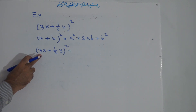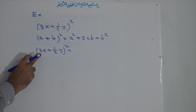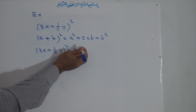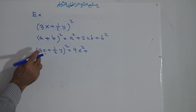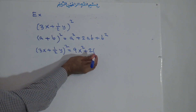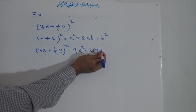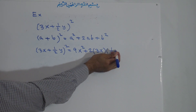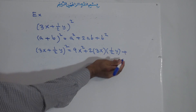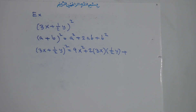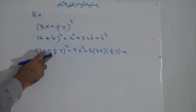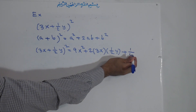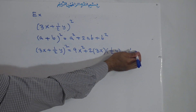The square of 3 is 9, so 3 times 3 is 9, and the square of x is x to the power of 2, giving us 9x squared. Then plus 2 times a times b: a is 3x and b is one-half y. Plus the square of b, which is one-half y. The square of 1 is 1, and the square of 2 is 4, so we get one-fourth. And the square of y is y squared.